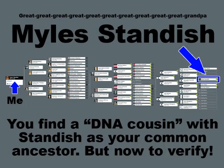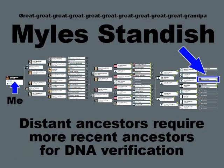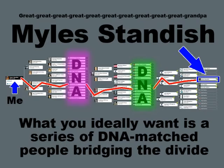Just to warn you, sometimes it's not actually entirely possible with genetics because of every combination — check out that video to see what I mean by that. Anyway, distant ancestors require more recent ancestors for DNA verification. What you ideally want is a series of DNA-matched people bridging the divide. I'm going to show you exactly what this means in reality and how it plays out.